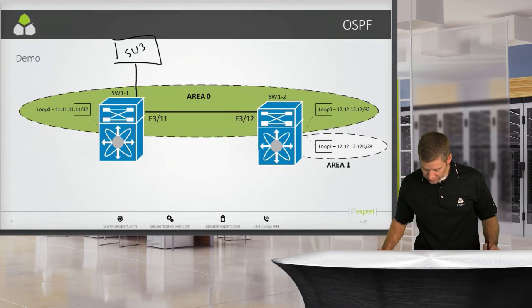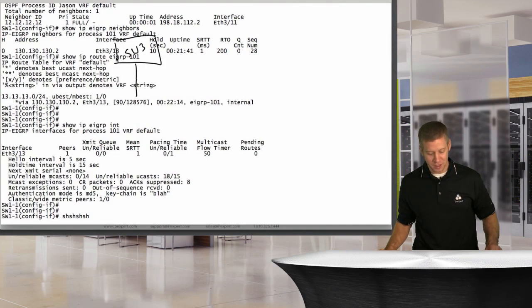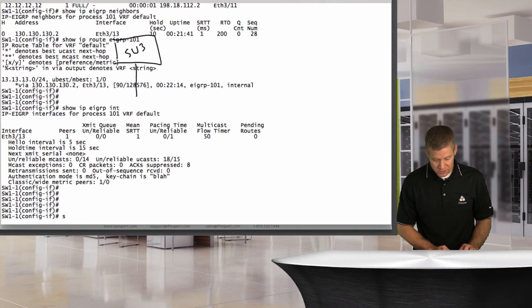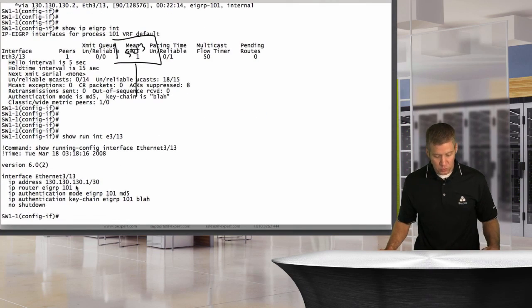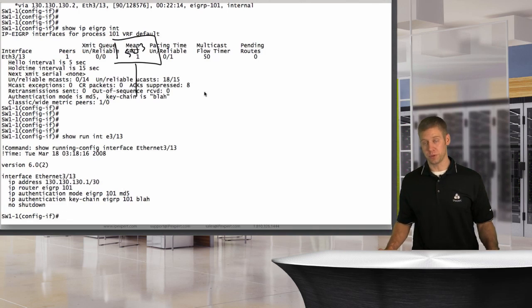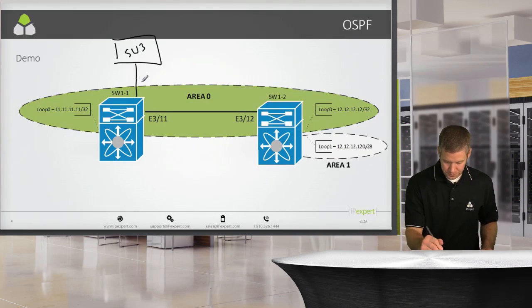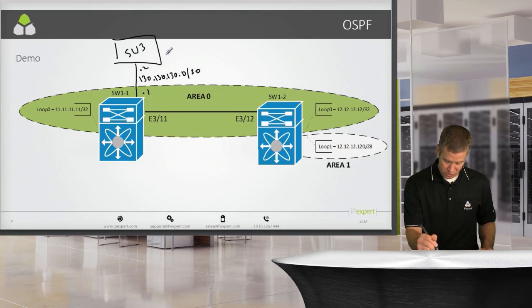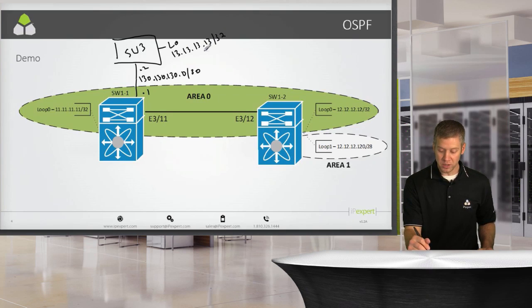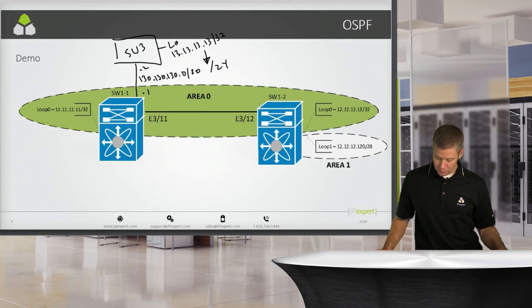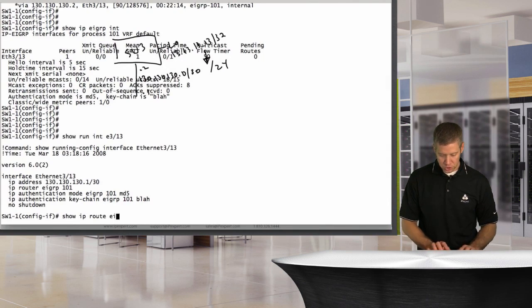Let's take a look at the IP addressing information. On switch one we can do 'show IP EIGRP interface' and 'show run int e3/13'. We used 130.130.130.1 on this side and 130.130.130.2/30 on the other side. We also had a loopback at 13.13.13.13/32, but we summarized that and sent it out as a /24. So on switch one, 'show IP route EIGRP' shows 13.13.13.0/24.